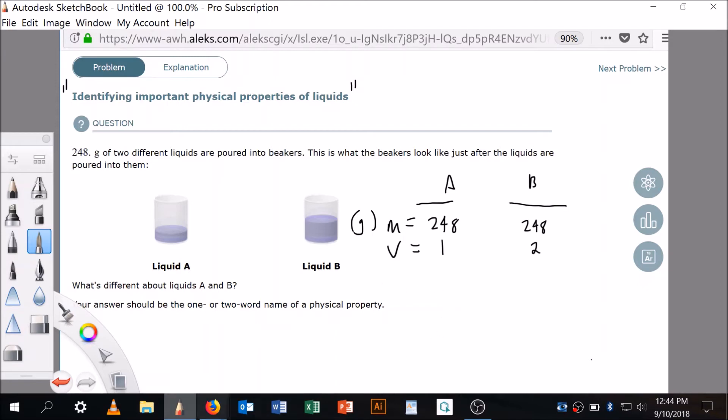What is a physical property? So I'm going to go to my notes and look up physical properties. The physical properties that I see, first of all, are viscosity, which is resistance to flow, and surface tension, which is resistance to increase in surface area.